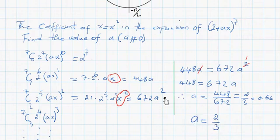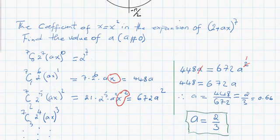We can conclude a equals 2/3. This is the value of a. We said that a is different from 0, in the condition that the coefficient of x was equal to the coefficient of x to the power 2. We didn't need to go that far because the power of x was increasing. Thank you for watching again, guys. Bye-bye.